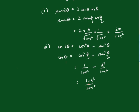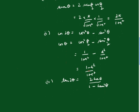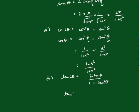Now part 3: we know tan 2θ equals 2 tan θ over (1 minus tan²θ), so tan θ equals 2 tan(θ/2) over (1 minus tan²(θ/2)). Since tan(θ/2) is t, that gives us 2t over (1 minus t squared).